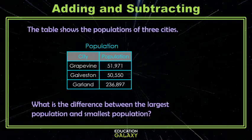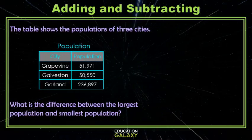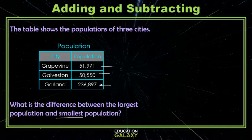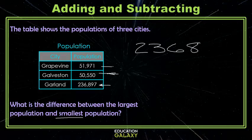Okay we have three populations here and we want to know the difference between the biggest city and the smallest city. Okay let's give ourselves some room to work here. Let's first find the largest city. So these are both five digit numbers so this six digit number is the largest. And then we want to know the difference between that one and the smallest. So which one's smaller? Well I have a five in the ten thousands here but I have a one in the thousands here and a zero in the thousands here which makes this one the smallest. Okay so now let's write our subtraction problem. We have two hundred thirty six thousand eight hundred ninety seven minus fifty thousand five hundred fifty.